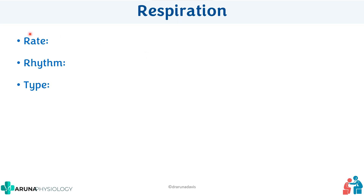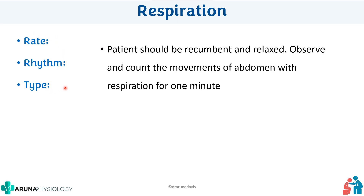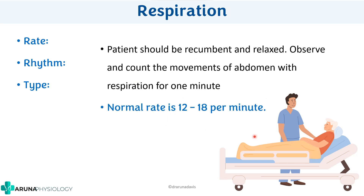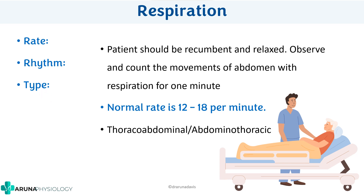For respiration, mention rate, rhythm, and type. To check the rate, place your hand on the radial pulse as if checking the pulse, but keep your eyes on the abdominal movements so the patient is less conscious of being observed. Count abdominal movements for one full minute. The normal rate is 12 to 18 per minute. Check whether the rhythm is regular, and note the type: in males it is usually abdomino-thoracic, while in females it is thoraco-abdominal.